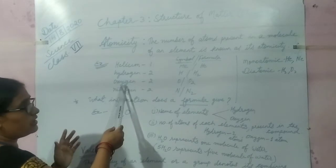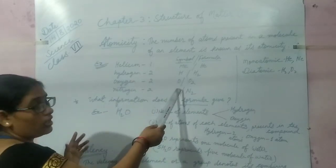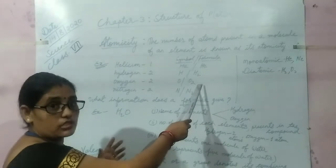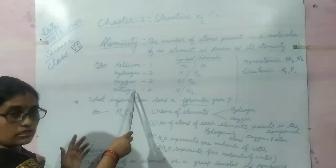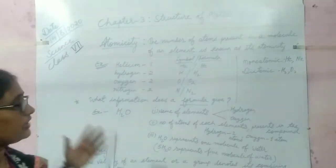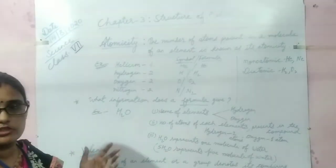For example, oxygen: symbol is O but its formula is O2 because they are diatomic. It means one molecule of hydrogen, oxygen, and nitrogen contains two atoms. That is why they are termed as diatomic elements.